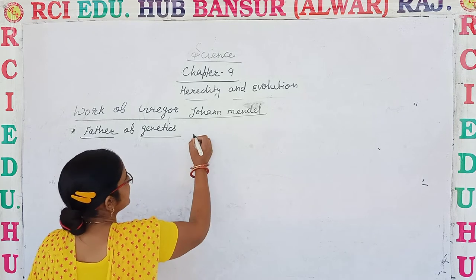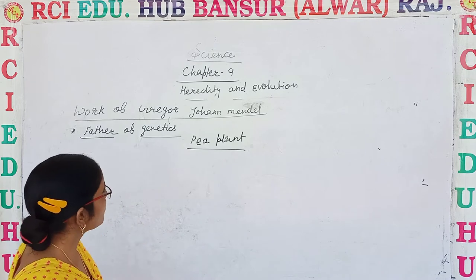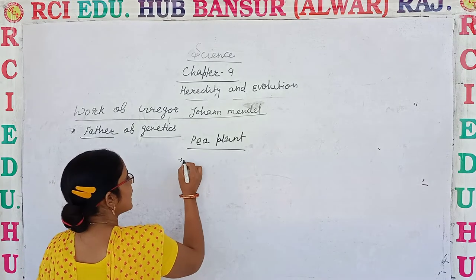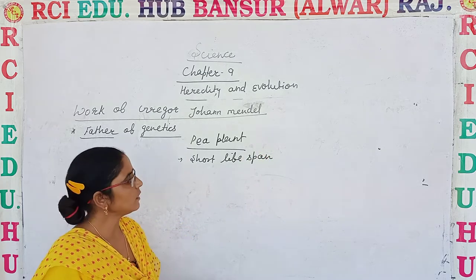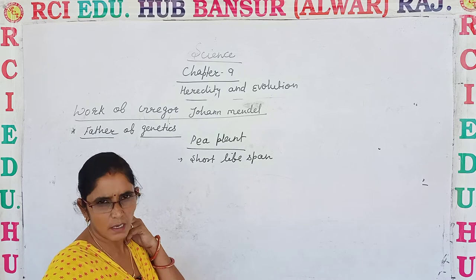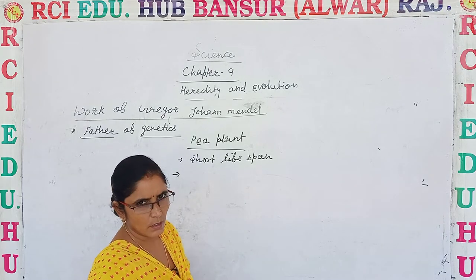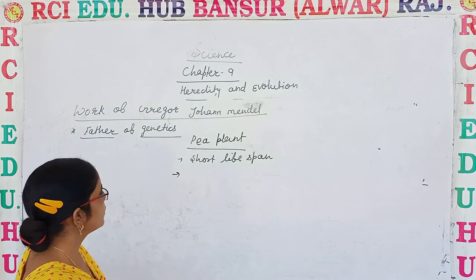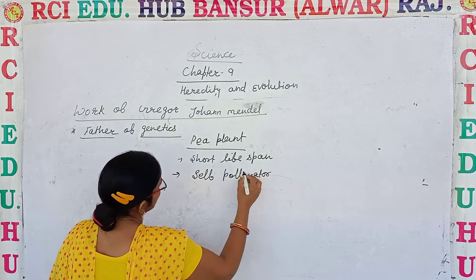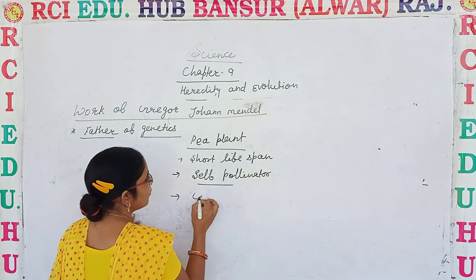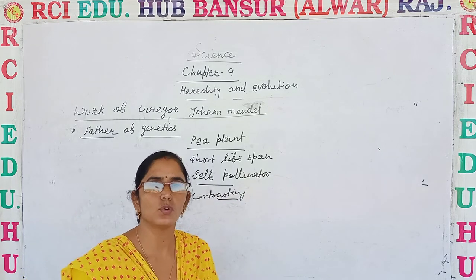His experiment was done on the pea plant. He worked on the pea plant's seeds. There was a reason behind this. One reason is its short life span — the life cycle completes in 3 to 4 months, so you get results as soon as possible. Another reason is that it is a self-pollinator, and in some cases cross-pollination is also possible. For these reasons, Mendel chose the pea plant for his experiment.